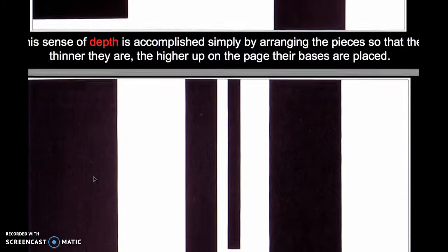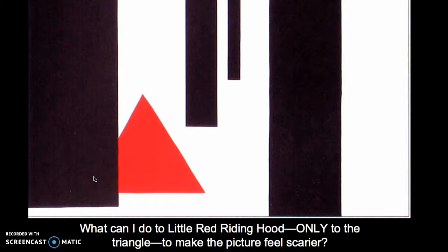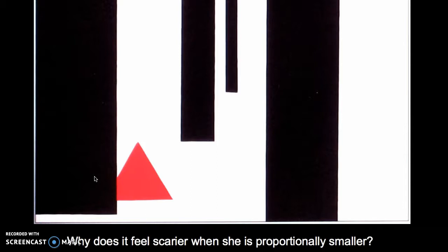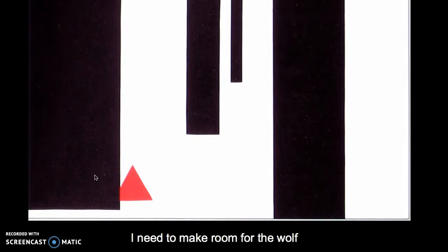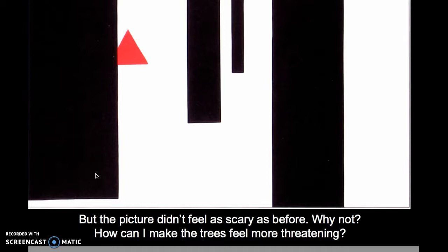She places Little Red Riding Hood in the woods itself, and asks: what can we do to Little Red Riding Hood — only to the triangle — to make the picture feel even scarier? We can make it smaller. What happens when we make objects proportionately smaller? But of course we need to make room for the wolf. The picture didn't feel as scary as before — why not? How can she make the trees feel more threatening?